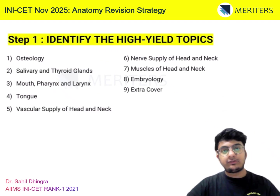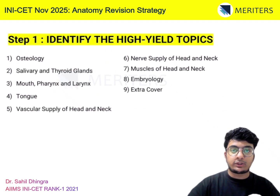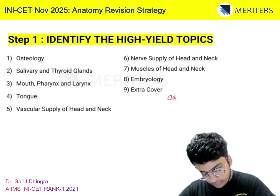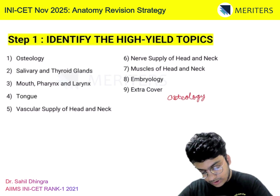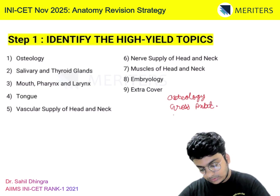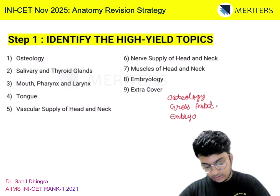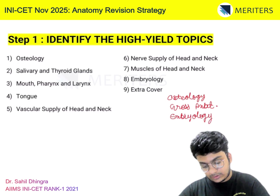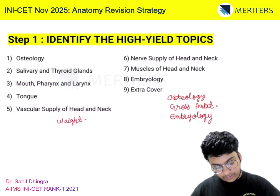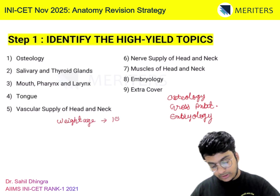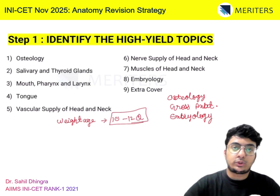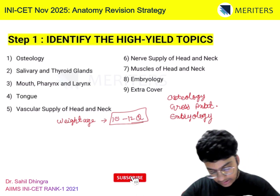Step one is to identify the high-yield topics — what is the weightage of each chapter? In your anatomy subject, it is divided broadly into three categories: Osteology, Gross Anatomy, and Embryology. Overall, the weightage for anatomy in INICET is usually around 10 to 12 questions out of your 200.